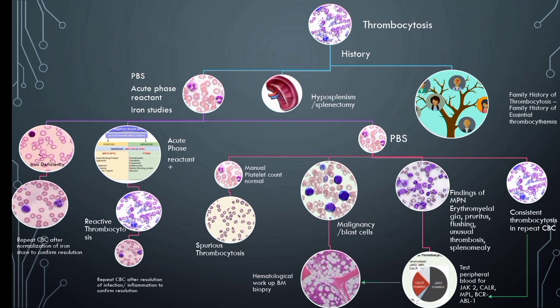One should go for acute phase reactant analysis like CRP to check for other reactive conditions. Peripheral blood smear examination is important for thrombocytosis, as it can distinguish between spurious thrombocytosis and true thrombocytosis.